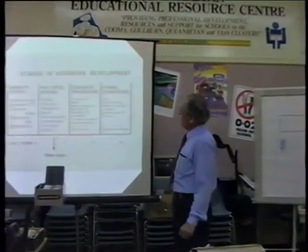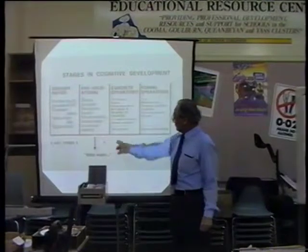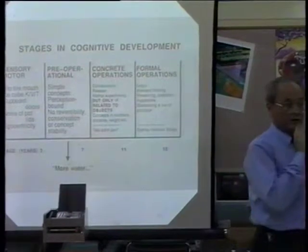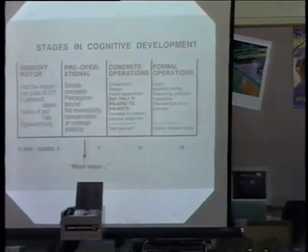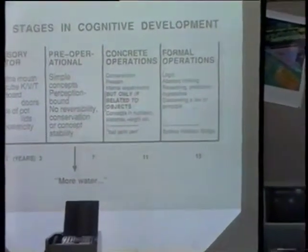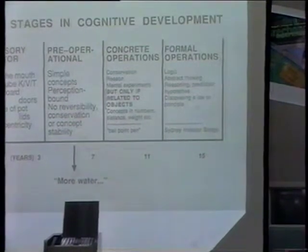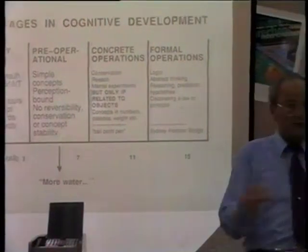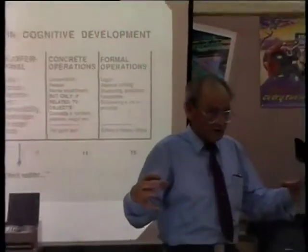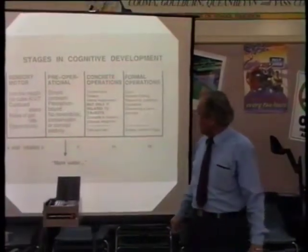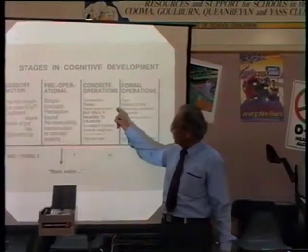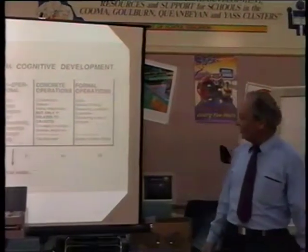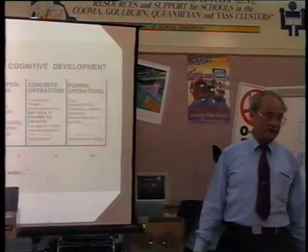Then we come to the next stage, which is from about 7 to 11, maybe 12 years — the concrete operations stage. This is where it begins to get interesting, and this is the stage we are concentrating on. What happens? We now have conservation, which means we can also reverse a certain process. We have reason, we can do mental experiments. However, I have to highlight this — only if related to objects.